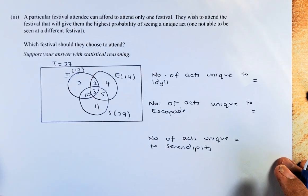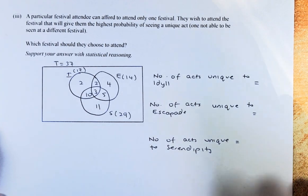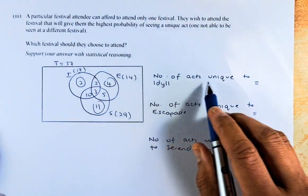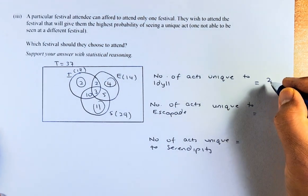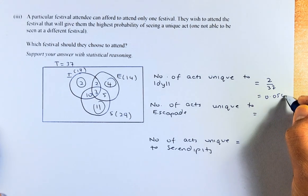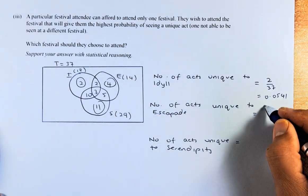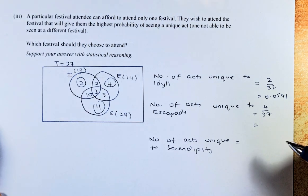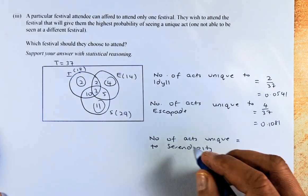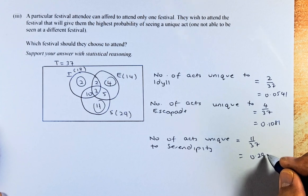So we have again transferred the Venn diagram here. A particular festival attendee can afford to attend only one festival. They wish to attend the festival that will give them the highest probability of seeing a unique act. So these are all the unique acts. The unique act for Idyll is going to be 2 out of 37, or in decimal is 0.0541. Similarly, for unique to Escapade is 4 out of 37, or in decimal is 0.1081. And last but not least, unique to Serendipity is 11. So 11 over 37, that will give us 0.2973.